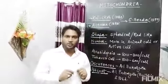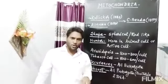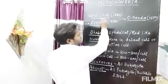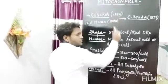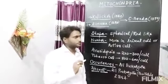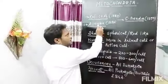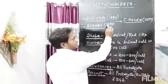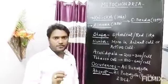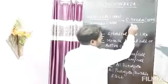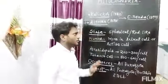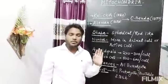Before starting the topic, I would like to tell you the history of mitochondria. Scientist Kulikar, in 1880, first discovered the mitochondria from striated muscle of insect. After that, Scientist Altman, in 1890, first coined the term bioplast for mitochondria. And Scientist C. Bender, in 1897, coined the present name of mitochondria.